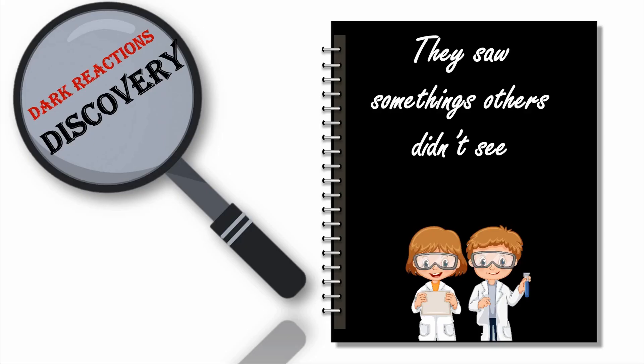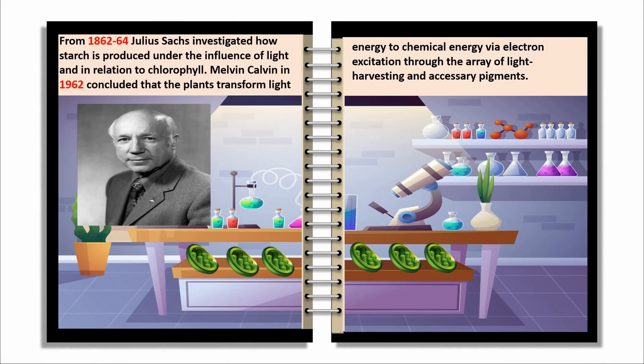Dark Reaction Discovery — they saw something others didn't see. From 1862 to 1864, Julius Sachs investigated how starch was produced under the influence of light and in relation to chlorophyll. Melvin Calvin concluded that plants transform light energy to chemical energy via electron excitation through an array of light-harvesting and accessory pigments.